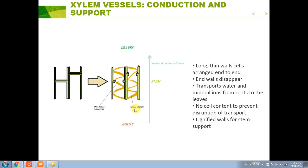Another important feature of xylem vessels is that they have lignified walls. This means the walls of the xylem vessels contain something called lignin, which is a very strong substance that strengthens the vessel. That's important because if the vessels are strengthened, the stem also gets strengthened, and that overall helps to support the plant.